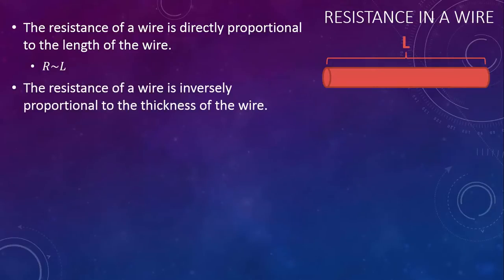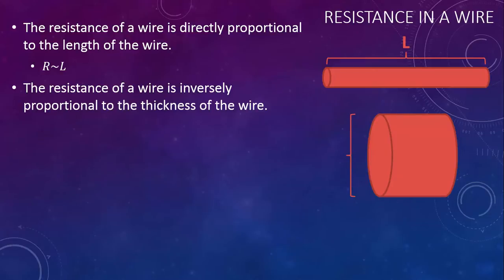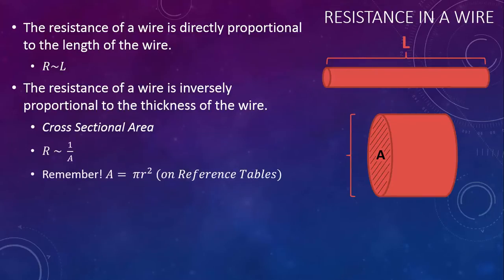The resistance of a wire is inversely proportional to the thickness of the wire. The thicker the wire, the easier it is for electrons to flow. The quantity that we actually use that's related to the thickness of a wire is called the cross-sectional area. If you took a wire and cut it in half and then looked at the end, you'd see a circle, and that circle would have an area. The resistance of a wire is inversely proportional to that area. Remember, the area of a circle is pi r squared, and they actually remind you of that on your reference tables.